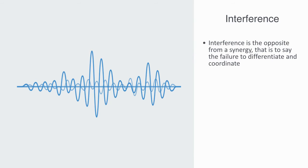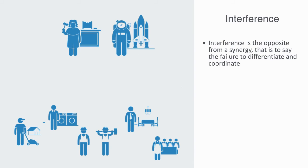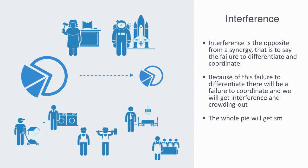For example, if a society doesn't provide proper education and training for its people, or they choose not to take it, there will be too few high-skilled specialized workers, and too many people looking for undifferentiated unskilled labor. Because of the failure to differentiate, there will be a failure to coordinate, and we will get interference and crowding out. Because of this destructive relation of interference, the whole pie will get smaller, and the variables associated with all the components in the relation will go down together.